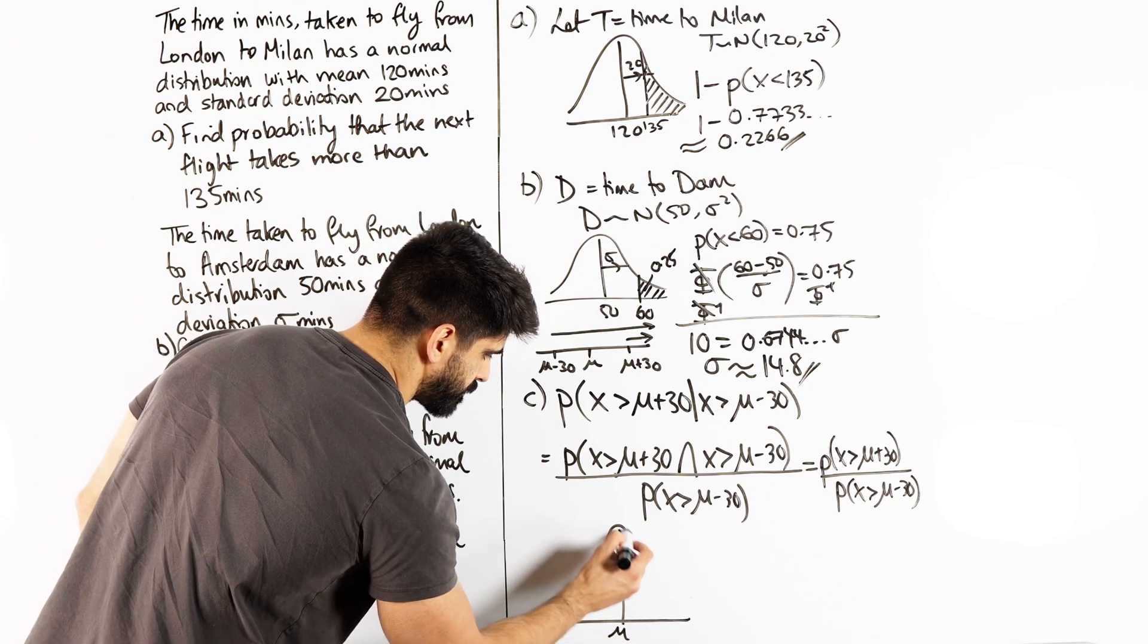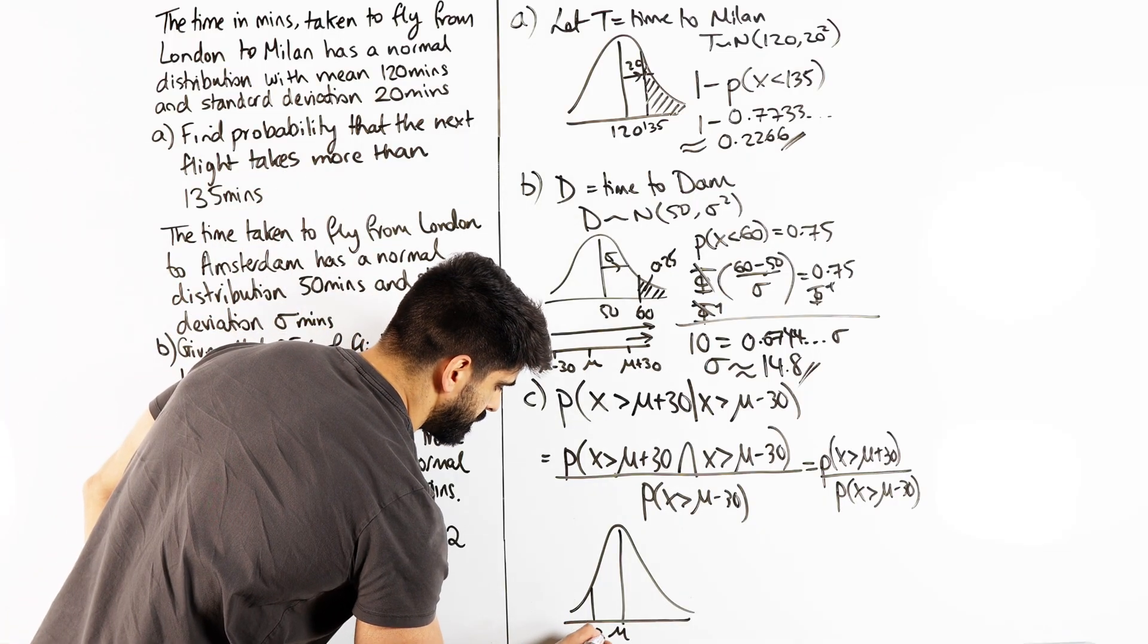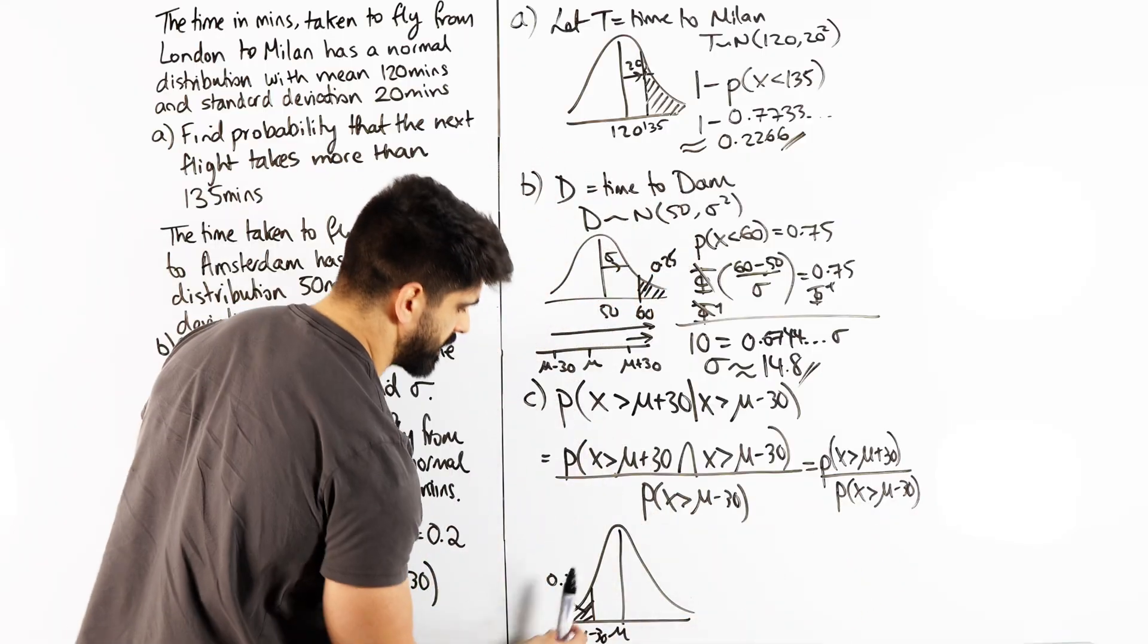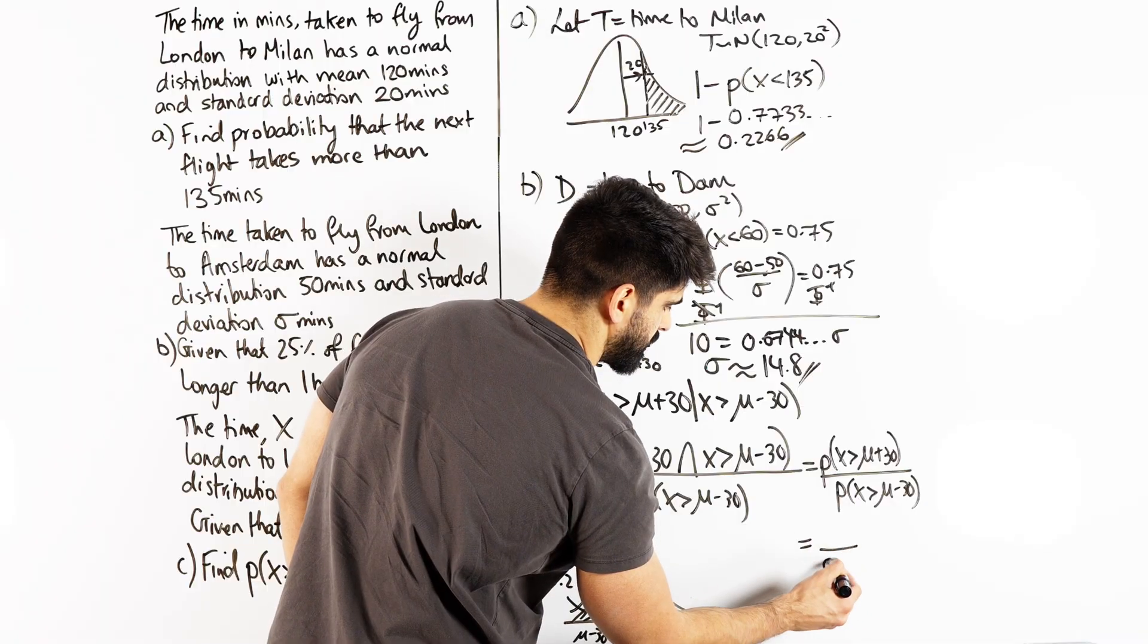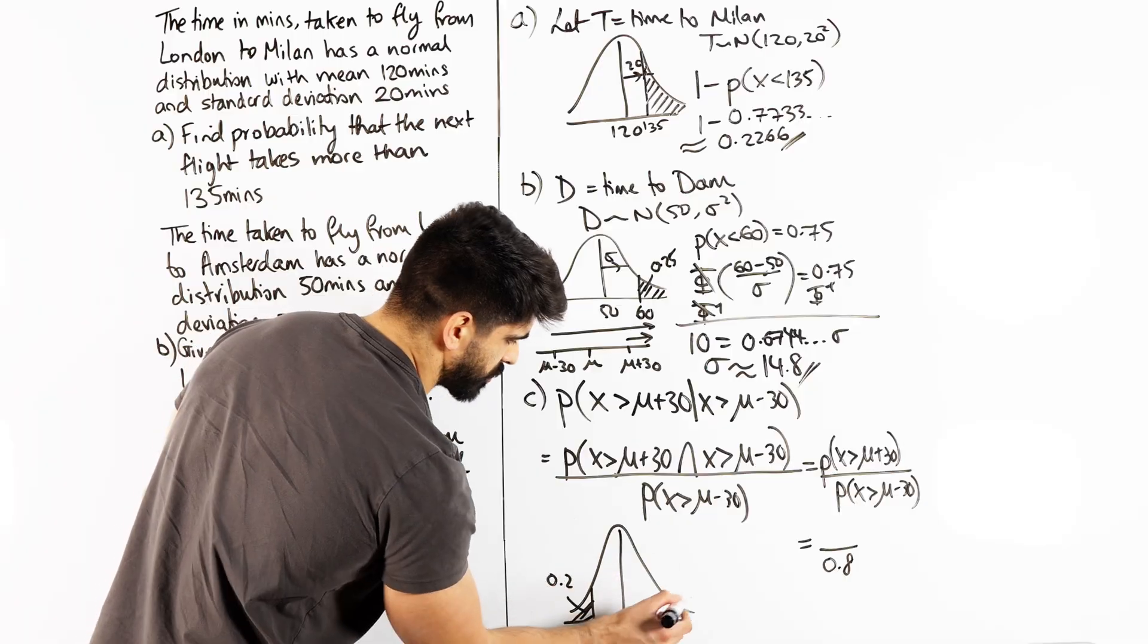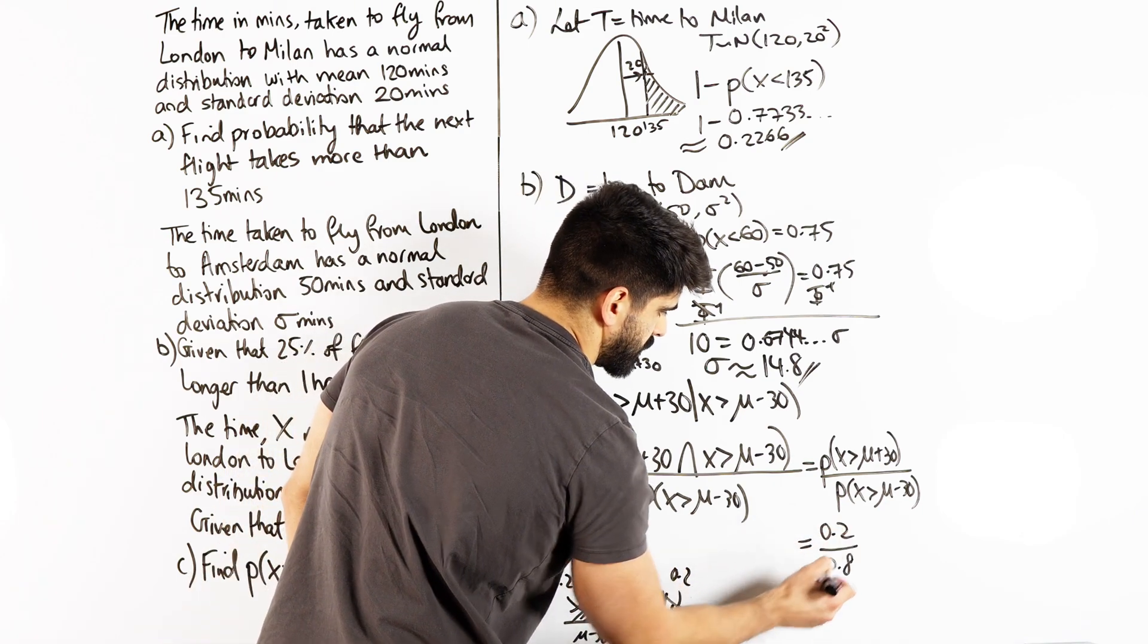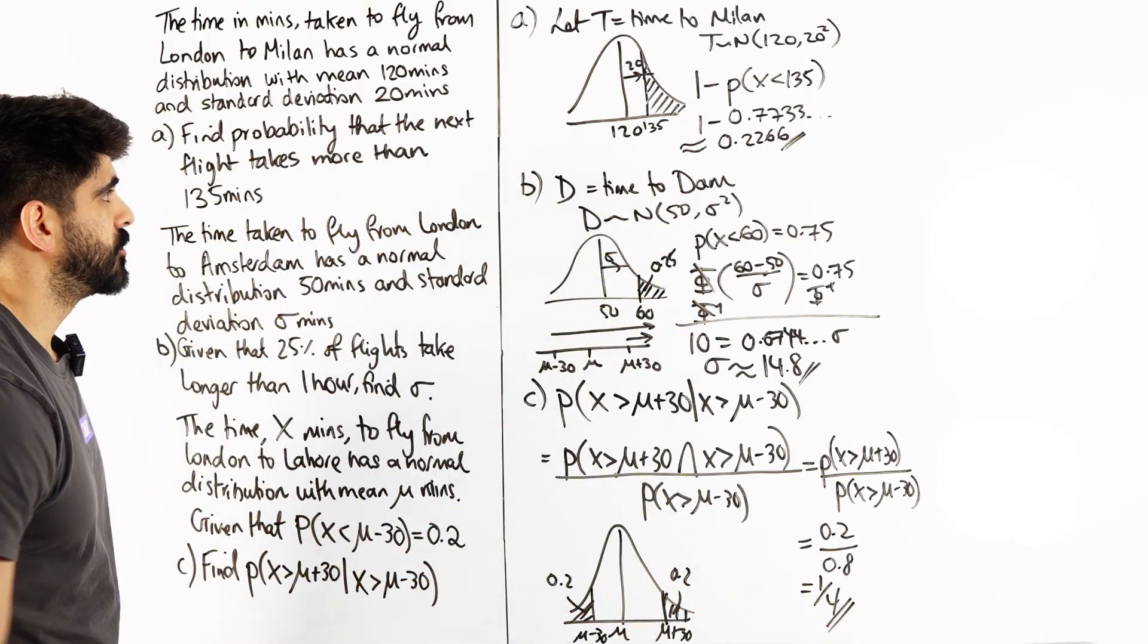So we have the probability that X is greater than mu plus 30, divided by the probability that X is greater than mu minus 30. What are these probabilities though? It's actually very simple. So we have mu. In the question I gave you guys mu minus 30, but less than that. I gave you that. This area here is 0.2. So that denominator of being greater than mu minus 30 is 0.8. But where would mu plus 30 be? Well, symmetry is going to be on the other side. What about greater than that? Well, that's just going to be 0.2 as well. So the answer is 0.2 divided by 0.8, which is 0.25 or 25%.